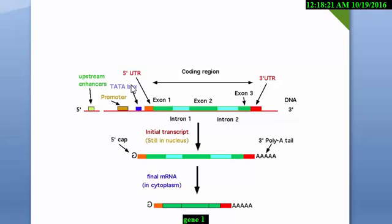Now, what is the TATA box? The TATA box contains thymine and adenine nucleotides. The TATA box is the region where RNA polymerase first binds. When the TATA box gets the promoter signal, the transcription process starts. So the TATA box is a very important element for gene structure and for the production of a protein.